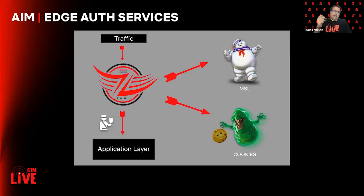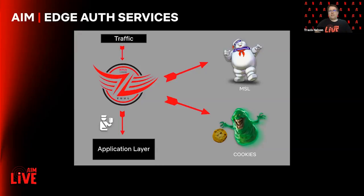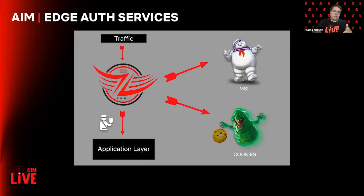MSL requests go up to the right to a service we call Stapoft, which processes MSL. If it's a cookie request needing additional processing, it goes to a service called Slimer, which is our cookie manager service. So we have a kind of haunting of ghosts that help Zool along with the edge authentication. What we're trying to do in the end is create a passport — a token-agnostic identity. No matter what security protocol is being used, we always create a passport and send it down to the application layer. The application layer can then inspect that passport to determine who the user is, what the device is, what the device type is, and what claims were used to authenticate the user.